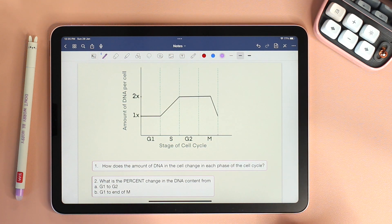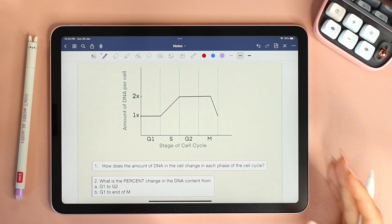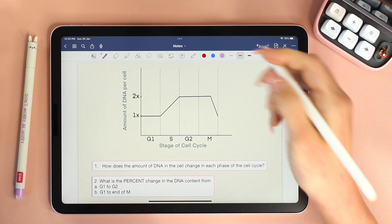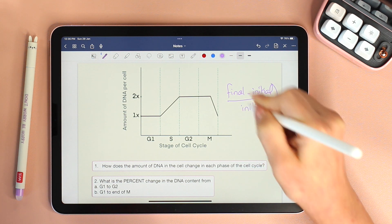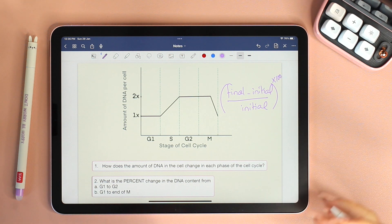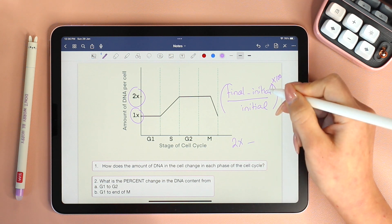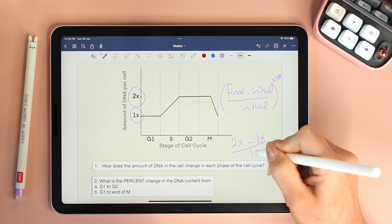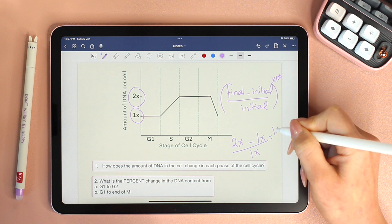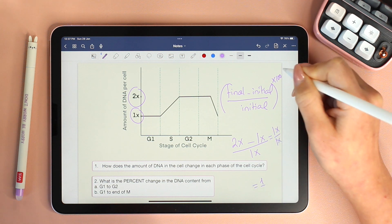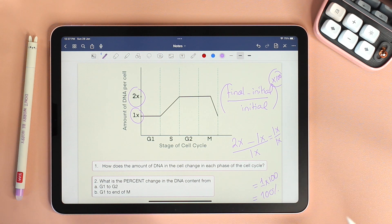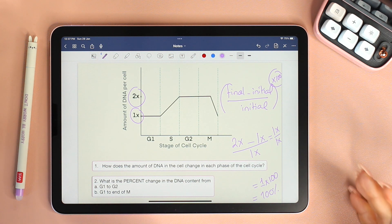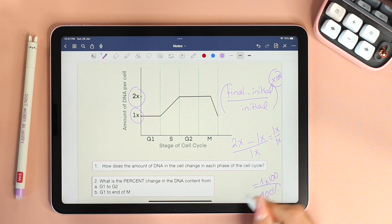In question two, what is the percent change in the DNA content from G1 to G2? The general formula to find the change in percent is always the final minus initial divided by initial. And of course, at the end, we have to multiply the whole thing by 100 because we want to get it in percent. What is our final value? It's 2x, right? Minus initial 1x divided by initial 1x. 2 minus 1 is 1. So I'm going to end up having 1x divided by 1x, which is 1. And if I multiply by 100, I will get 100%. I am sure that this was so obvious because you know that if something goes from 1x to 2x, if something doubles, that's a 100% increase. But for those of you who find it challenging, just apply the formula and you will get to the same answer.